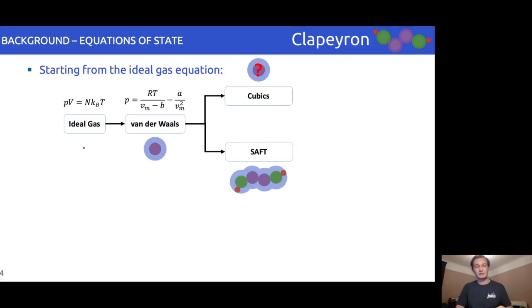There are also multi-parameter equations, which are defined for specific systems with an abundance of data, for example water and natural gases. All of these models are supported in Clapeyron.